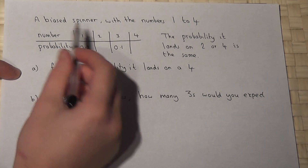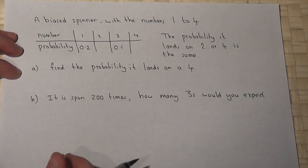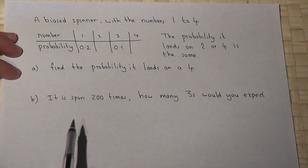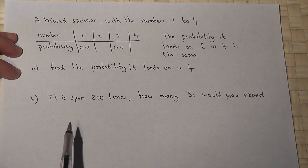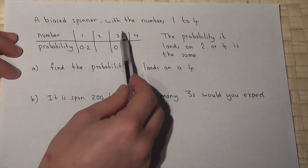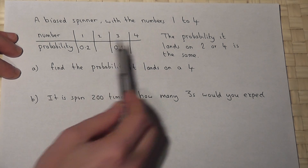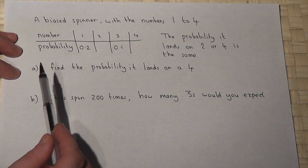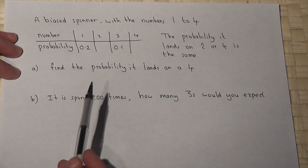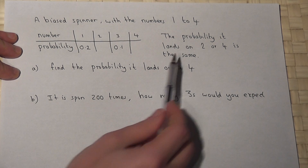In this question we've got a biased spinner which is spun around and it's got the numbers 1 to 4 on it. The chance it lands on a 1 is 0.2, on a 3 is 0.1, but we're missing the numbers for 2 and for 4, and we're told that these two numbers are the same.